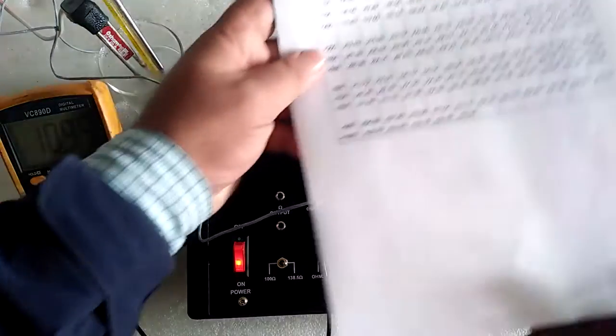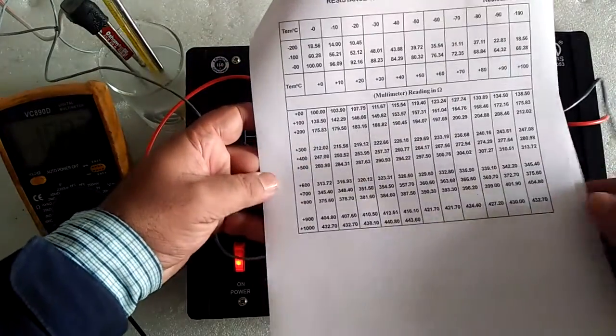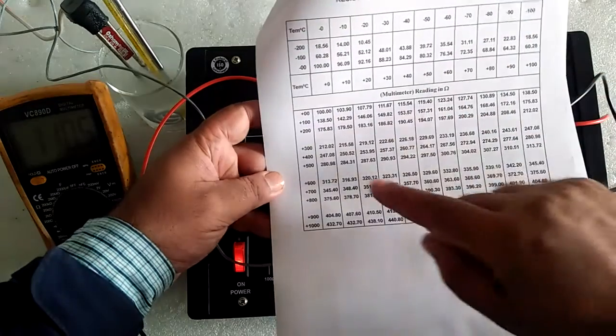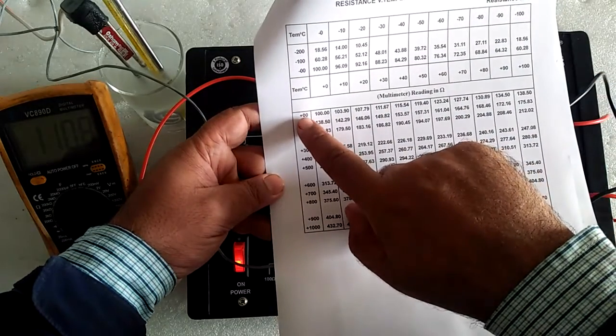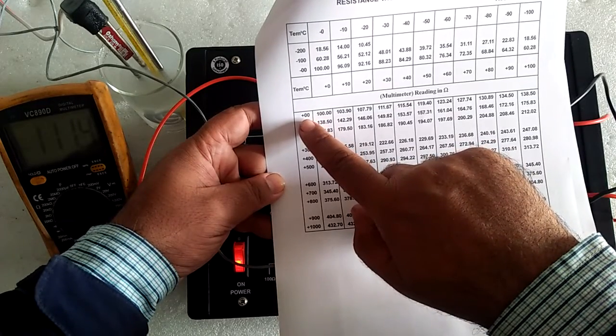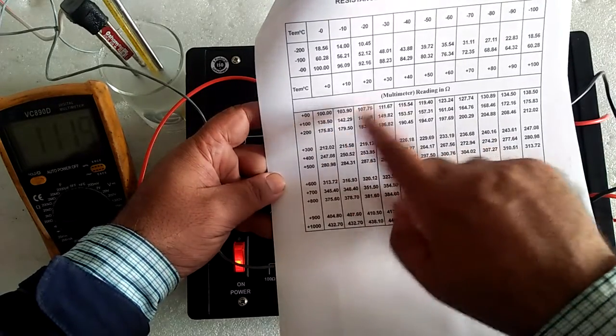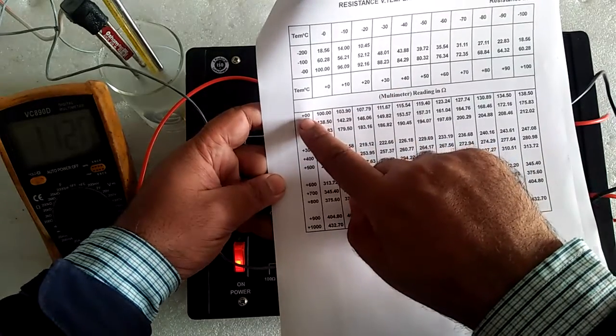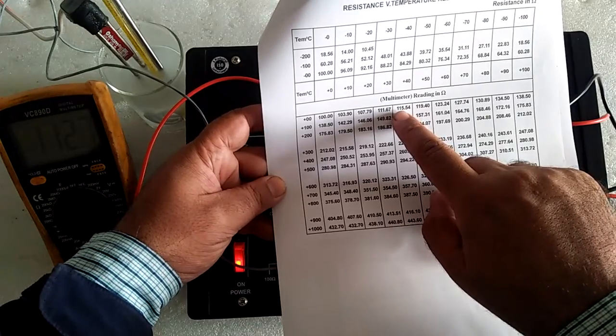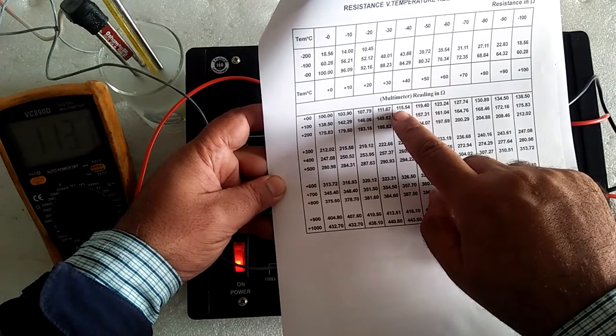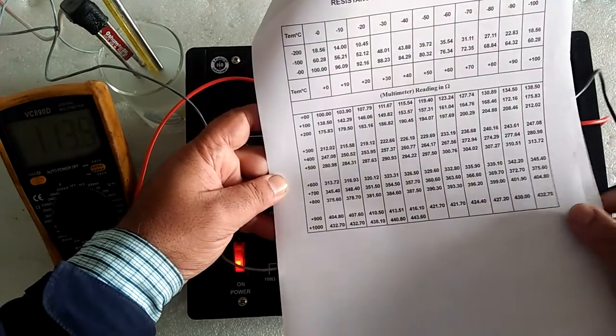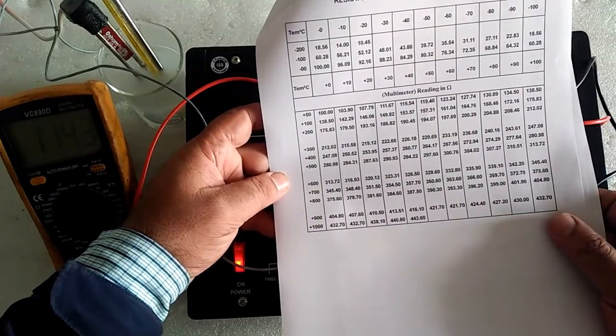Tabulate the result and match with this Pt100 chart. Here suppose we have to read the resistance at 140 degrees, then 0 is here and with this line 40 from above, around 115.54 ohms resistance of the Pt100.